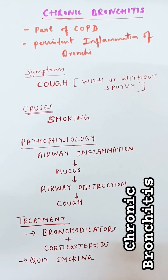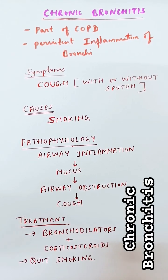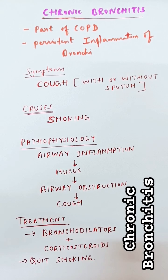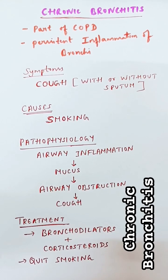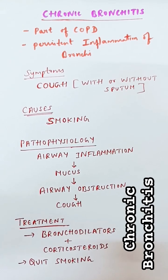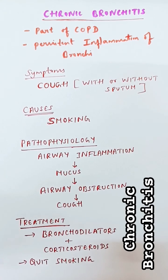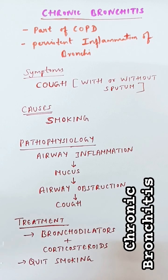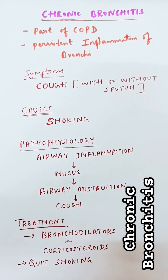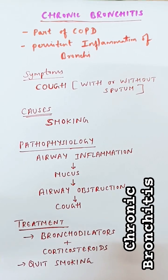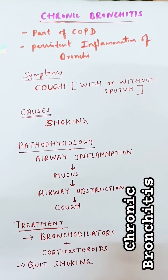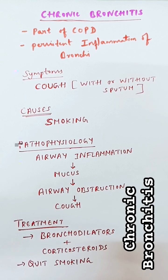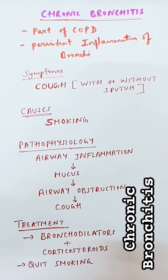Chronic bronchitis is a type of COPD. It is characterized by persistent inflammation of the bronchial tubes. To diagnose a patient with chronic bronchitis, the person must have chronic cough and sputum production for at least 3 months in 2 consecutive years.